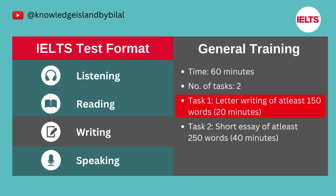In the General Training Writing test, only Task One will be different. In Task One, you will be presented with a situation and asked to write a letter requesting information or explaining the situation. The letter may be personal, semi-formal, or formal in style, and you will be asked to write at least 150 words within 20 minutes.